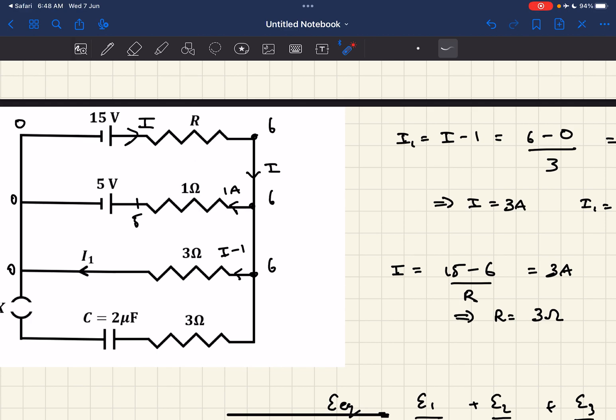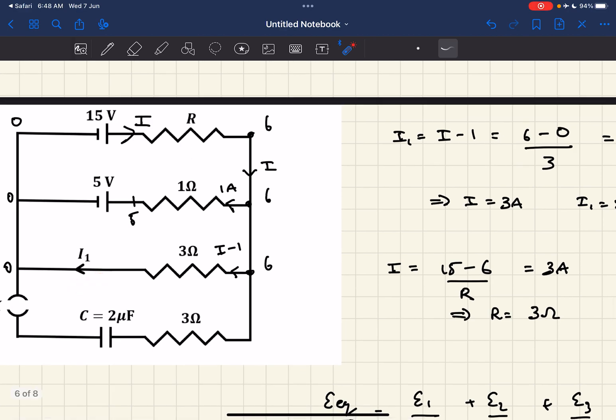First of all, we need to find the current i1 and the resistance r. It's given that the current in branch 2 is 1 ampere. I assume the current in branch 1 is i, and it splits as 1 ampere here. By using KCL or Kirchhoff's current law, I could say the current in this branch is i minus 1.